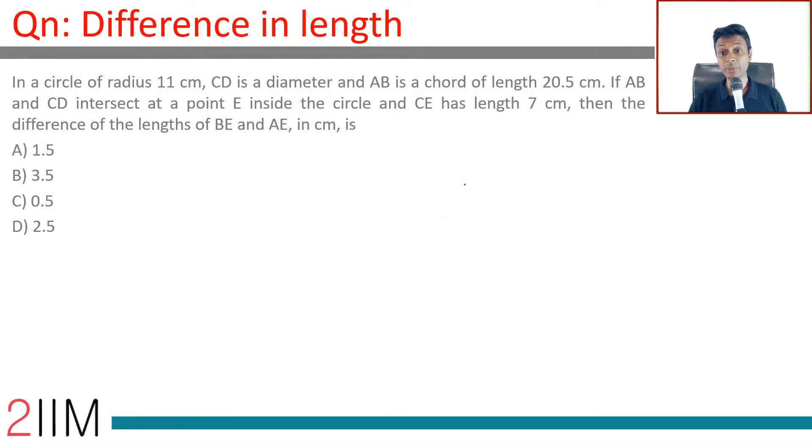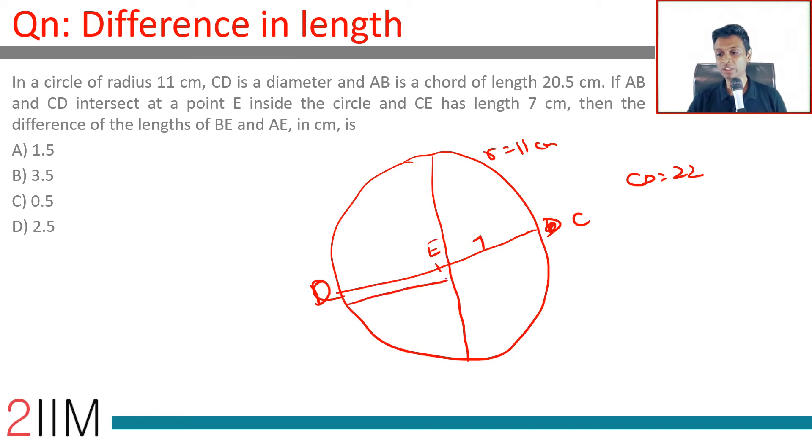In a circle of radius 11 centimeters, CD is the diameter. So CD measures 22. Radius is 11. AB is a chord of length 20.5. CE has length 7, so I should mark this as D, this is C. Because I put the center here, I'll call this E. CE is 7, or DE is 15.